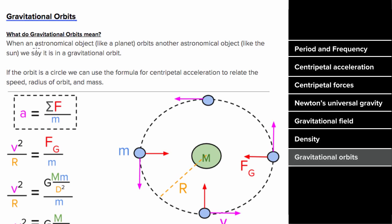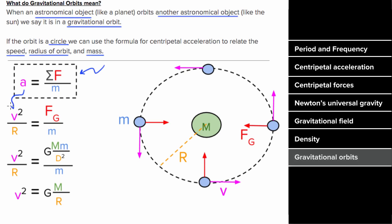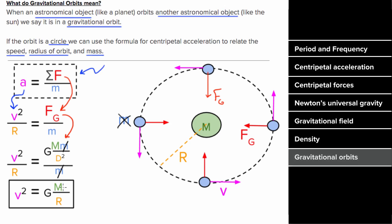Gravitational orbits are a special case of centripetal acceleration where an object orbits another due to gravitational force. For a circular orbit, we use Newton's second law with centripetal acceleration v² / r, and the centripetal force is the gravitational force G × m₁ × m₂ / r². Since the mass of the orbiting object cancels, we get an expression relating the orbital speed to the larger mass and the center-to-center distance. Solving for v gives the square root of G times the central mass divided by the center-to-center distance.